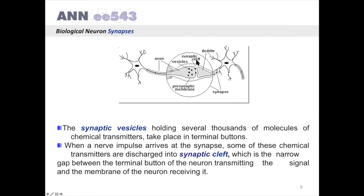When a nerve impulse arrives at the synapse, some of these chemical transmitters are discharged into a synaptic cleft, which is a narrow gap between the terminal button of the neuron transmitting the signal and the membrane of the neuron receiving it.